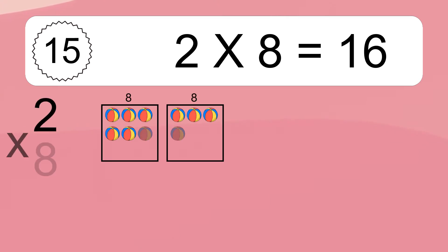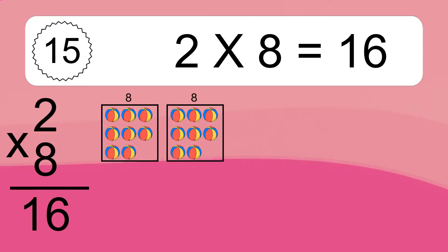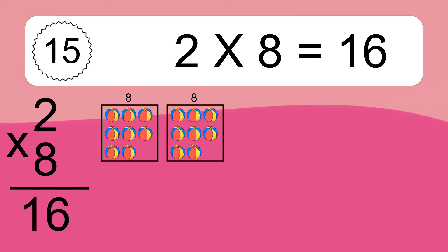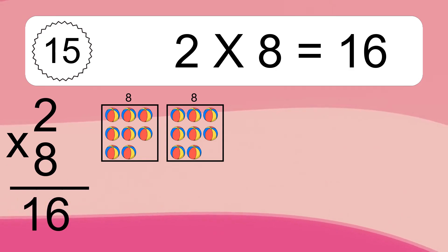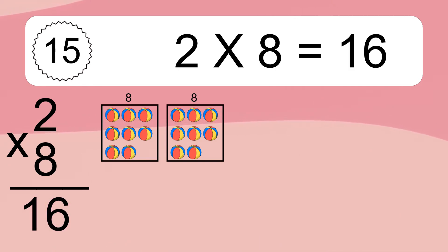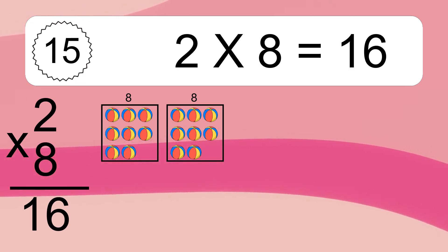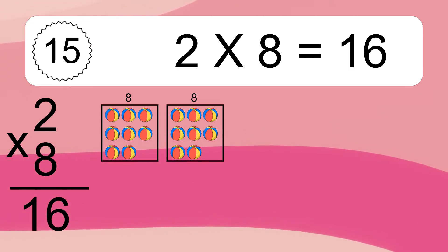Two times eight equals what? Two times eight equals 16. We have two boxes and each box has eight colorful balls inside. If you count all the balls in all the boxes together, you will have two times eight balls. This equals 16 balls.